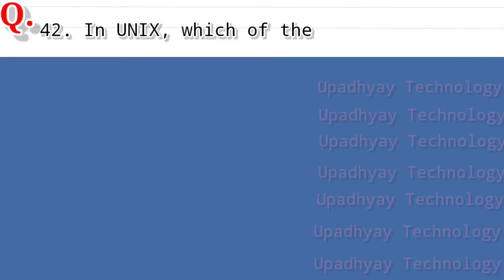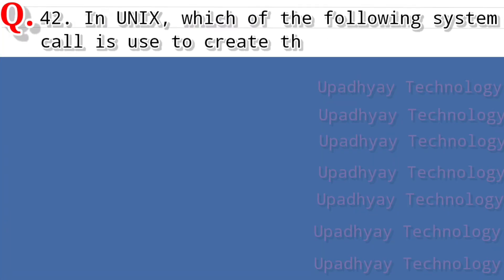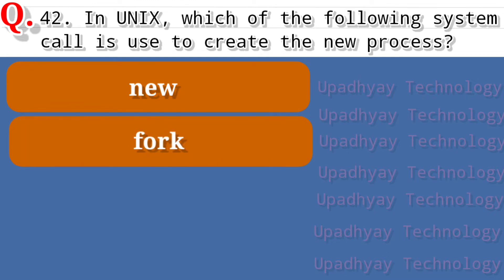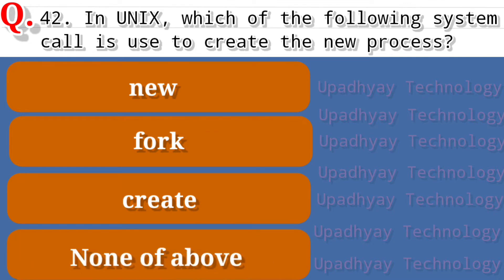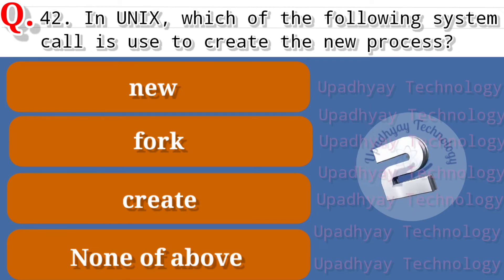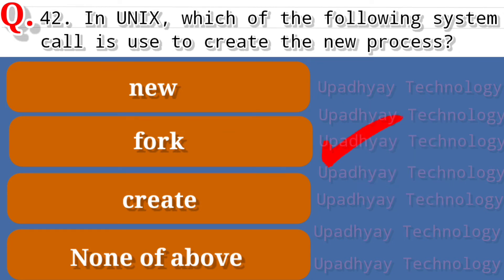Question number 42 of operating system: in UNIX, which of the following system calls is used to create a new process? The options are New, second option is Fork, third option is Create, and the last option is None of the above. The correct answer is Fork.